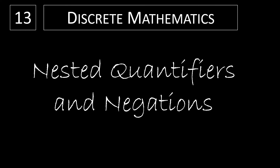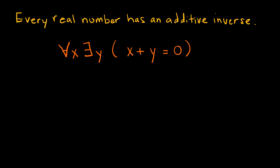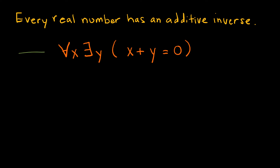In this video, we're going to discuss nested quantifiers and how to negate them. In an upcoming video, we are going to discuss how to take a statement like 'every real number has an additive inverse' and write it using quantifiers: for all x, there exists a y such that x plus y equals 0. For now, I just want to discuss when this is true and what the process involved is.